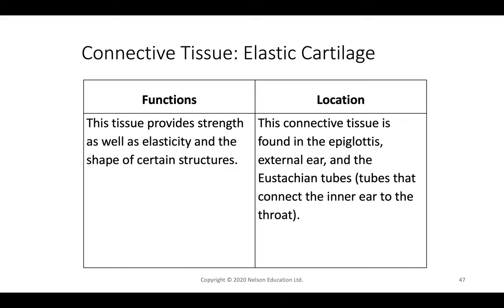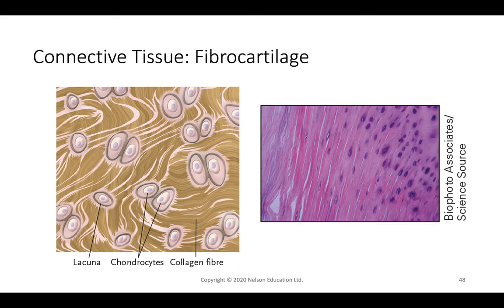Elastic cartilage is found in the epiglottis — the flap that separates the trachea and esophagus during swallowing — as well as the external ear and the eustachian tubes connecting the inner ear to the throat. Fibrocartilage contains organized collagen fibers similar to irregular dense tissue, with chondrocytes inside lacunae.